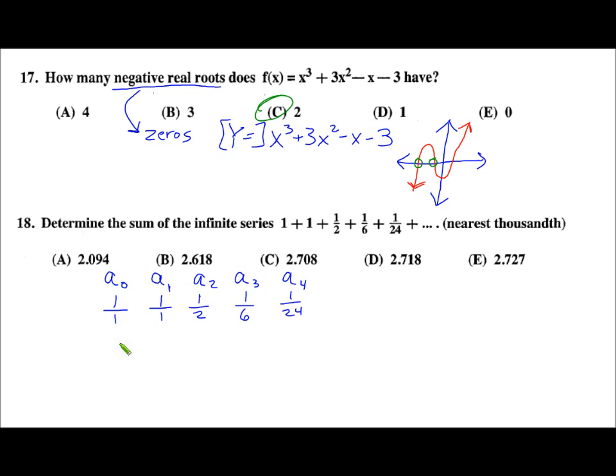The pattern that you should notice here is the denominators: 1, 1, 2, 6, 24. There's something very special about all those numbers. They are factorials.